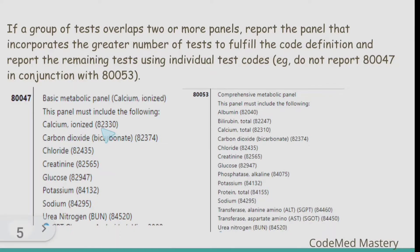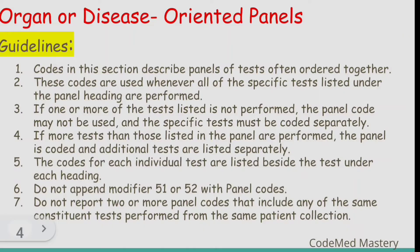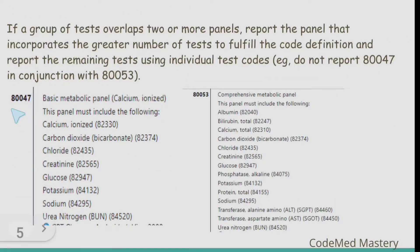For example, the code for the individual test calcium ionized is 82330. The next important guideline: do not append modifier 51 or 52 with panel codes — please take notes. Also, do not report two or more panel codes that include any of the same constituent tests performed from the same patient collection. For example, codes 80047 and 80053 should not be reported together.